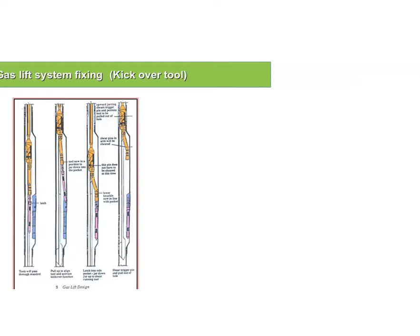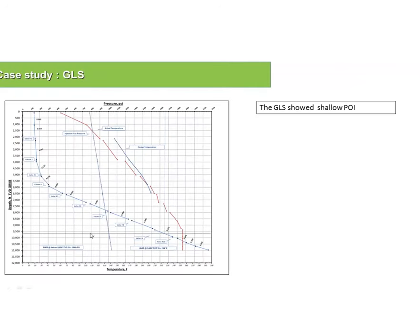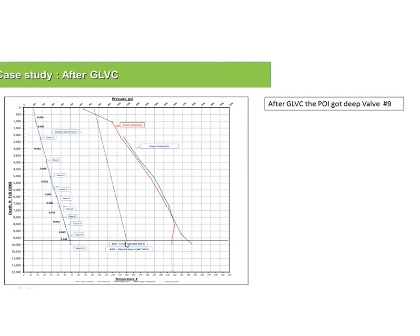Here is the case study. We performed a gas lift survey — the tubing pressure, casing pressure, and temperature are plotted. From this, I could see that the injection gas could theoretically reach valve number six, but the gradient change showed I was only injecting from valve number three — a shallower valve than intended. We performed a gas lift valve change to move injection to a deeper valve, achieving a steeper gradient change and maximum drawdown. This illustrates the practical benefit of gas lift evaluation and intervention.